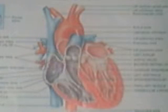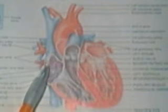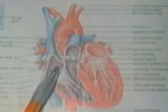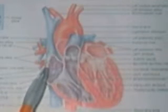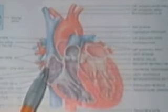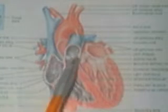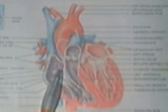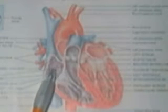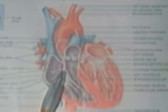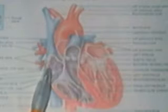When the pacemaker potential reaches a certain threshold, it triggers an action potential that travels down the entire right atrial wall until it reaches the atrioventricular or AV node, right between the two atria. And this is what causes the right atria to contract — when the current reaches the AV node, the right atria will contract.